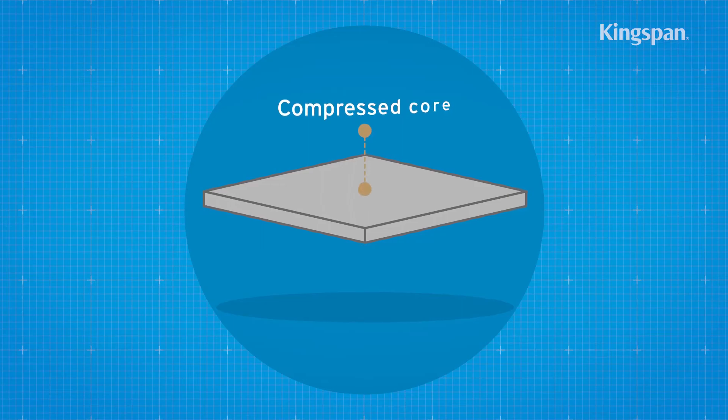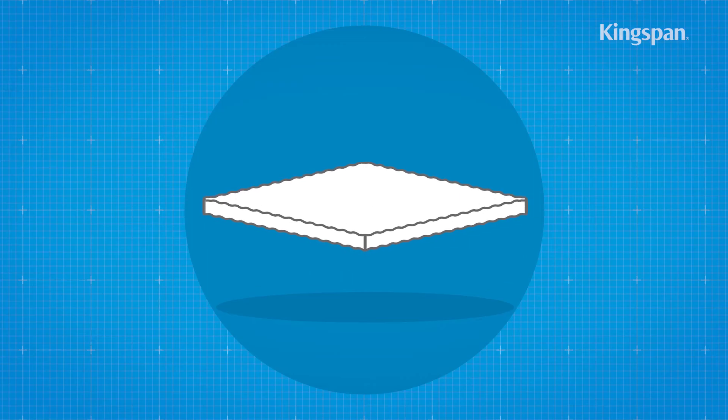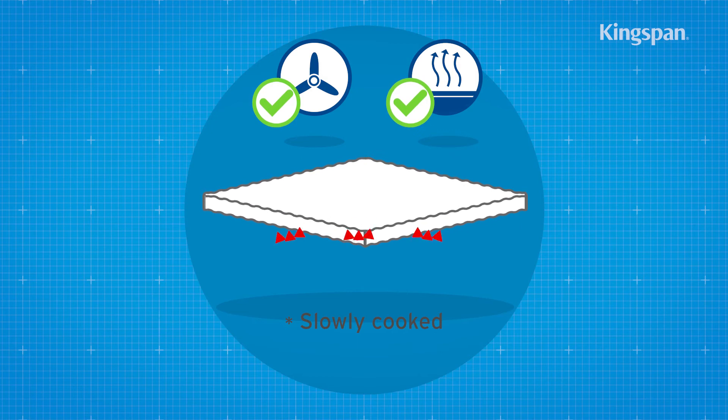The compressed core is then inserted within a fleece coating, which gives it protection from any dust. This is slowly cooked to dry it out as much as possible.